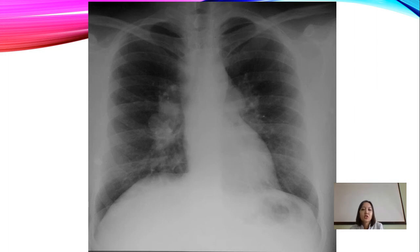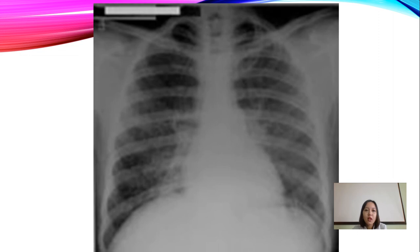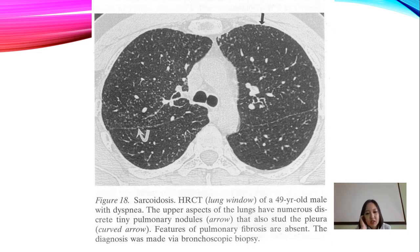On chest X-ray you will see pulmonary fibrosis at the right lower zone and increased hilar shadowing in both lungs. Another chest X-ray — though the quality is not good — shows extensive pulmonary fibrosis in the middle and lower zones bilaterally. On CT scan you will see pulmonary nodules indicated by arrows, and the start of pleural changes shown by curved arrows.